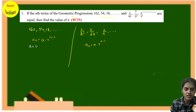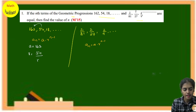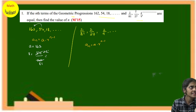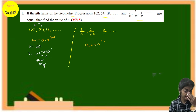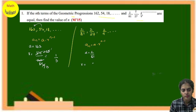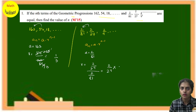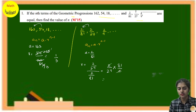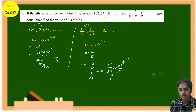For the first GP, the first term is 162. The common ratio is 54 divided by 162, which gives 1/3. For the second GP, the first term is 2/81. The common ratio is (2/27) ÷ (2/81) = (2/27) × (81/2), which simplifies to 3. So one common ratio is 1/3 and the other is 3.